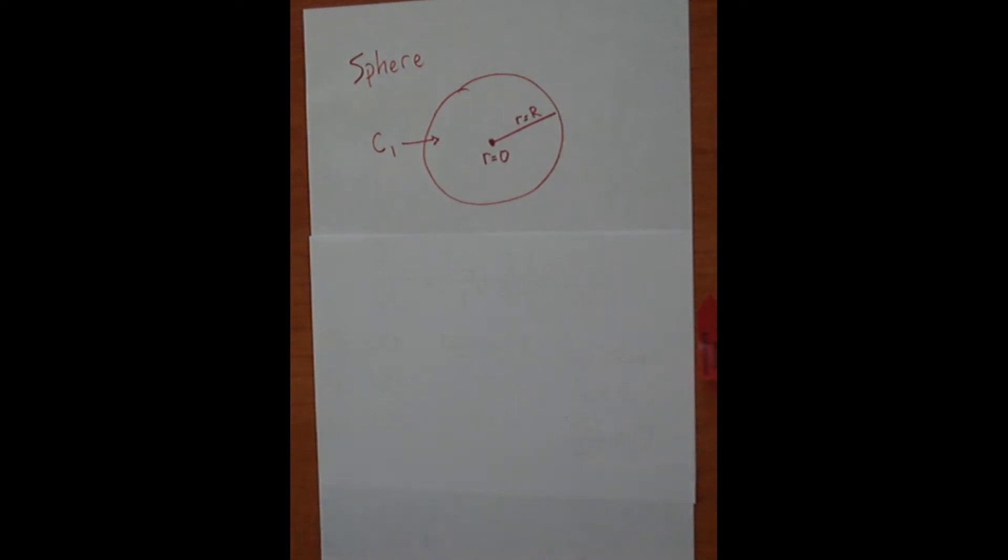Okay, so now we're going to go over a quick example like the last one of unsteady diffusion, but in this case the geometry is of a sphere. The same thing is that our solute is going to be diffusing into the sphere, and the bulk concentration of the solute we'll say is C1.